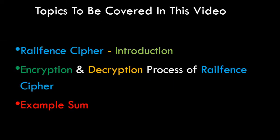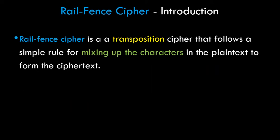We'll first see what rail fence cipher is and what transposition cipher means, and then we'll see the encryption and decryption process using an example. Rail fence cipher is a transposition cipher technique that follows a simple rule of mixing up the characters in the plain text to form the cipher text. In substitution cipher, plain text characters are replaced by new characters, but in transposition cipher the characters are not replaced — they are just jumbled up. That is the primary difference.